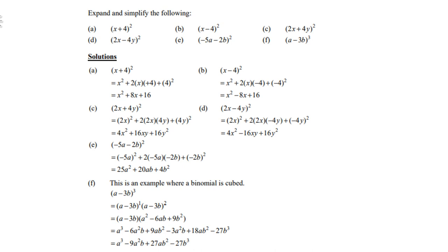d) (2x − 4y)²: 2x times 2x is 4x², negative 4y times negative 4y is positive 16y², middle term 2x times −4y times 2 is −16xy. e) (−5a − 2b)²: −5a times −5a is 25a², −2b times −2b is positive 4b², middle term −5a times −2b times 2 is positive 20ab.